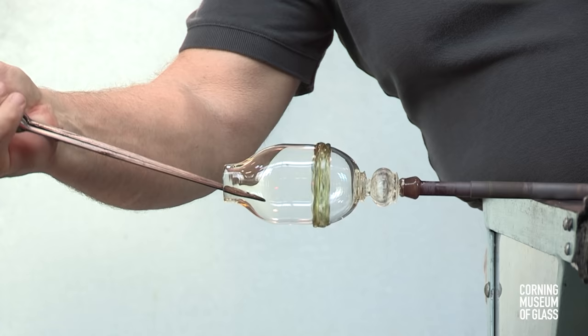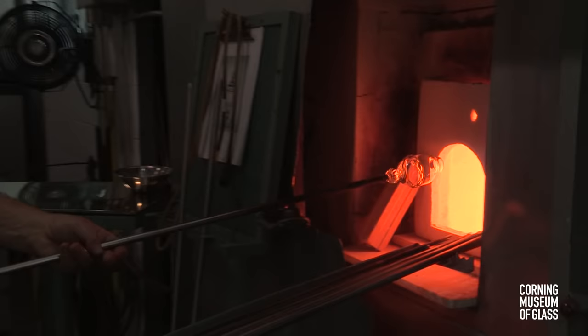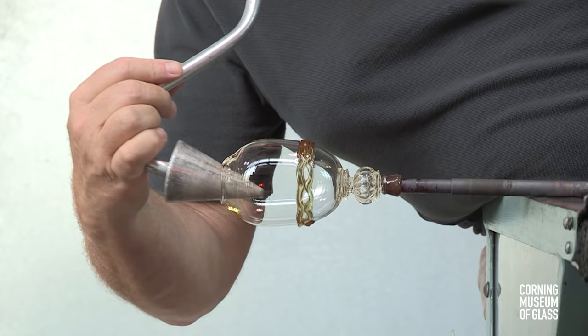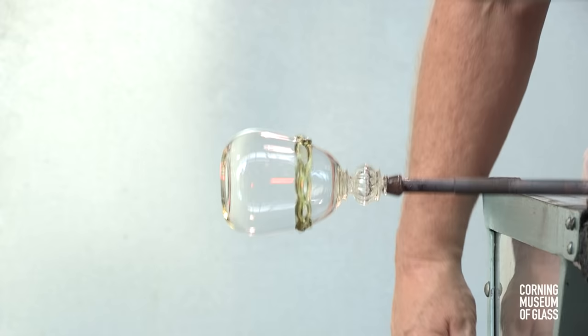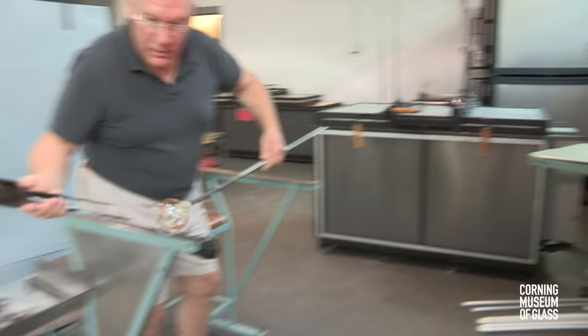After reheating, the hole is dilated to a diameter of about an inch. And after reheating, the soffietta is used. After another reheat, the flange is made. This flange will sit atop the rim of the goblet.